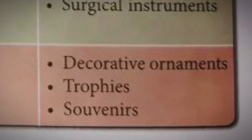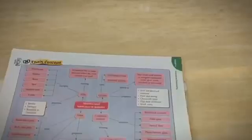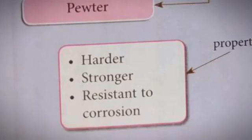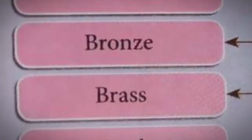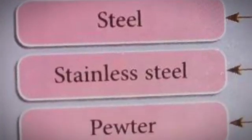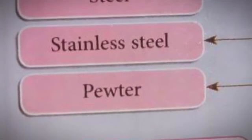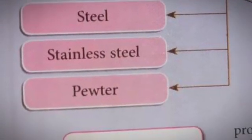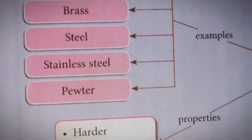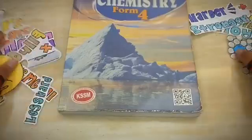To sum up, an alloy is a mixture of two or more elements where the main element is a metal. It is harder, stronger, and resistant to corrosion. Examples include duralumin, bronze, brass, steel, stainless steel, and pewter. According to the teacher, alloys is quite a challenging subtopic, so make sure you study hard and smart. That's all from us — thank you for listening. Bye and assalamualaikum.